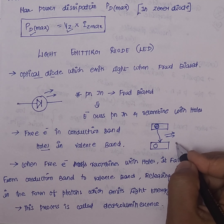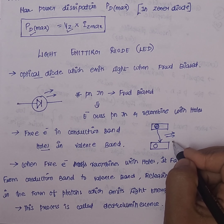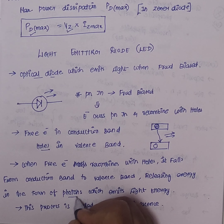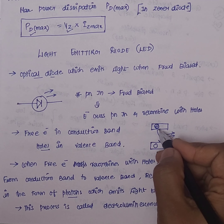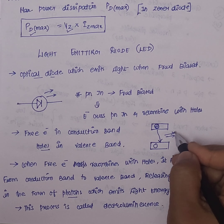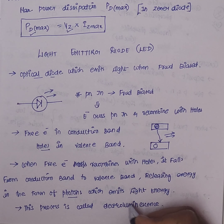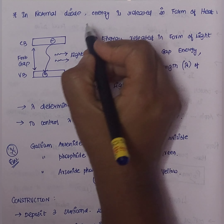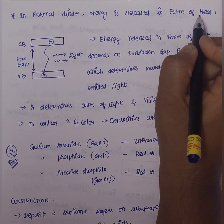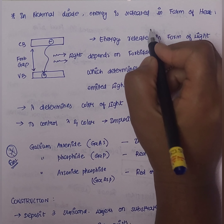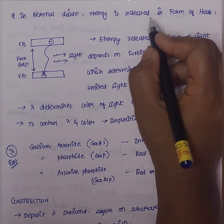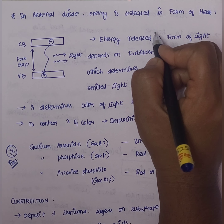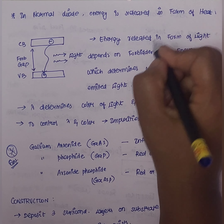When electrons and holes recombine in the valence band, we emit light rays. The light rays are in the form of photons. This is the unique feature. In the normal diode we release heat, whereas in the LED we release light. That is the major difference between this light emitting diode and the normal diode.